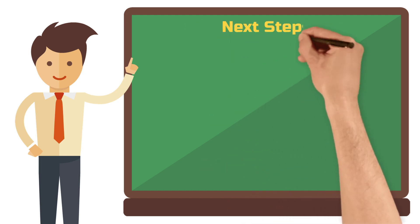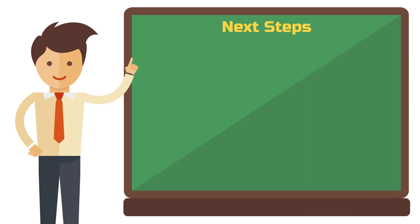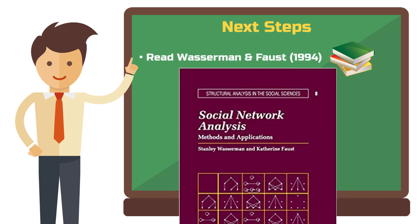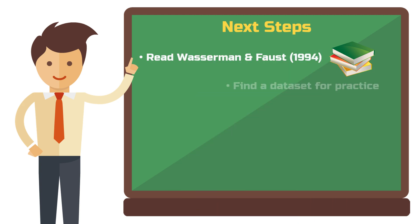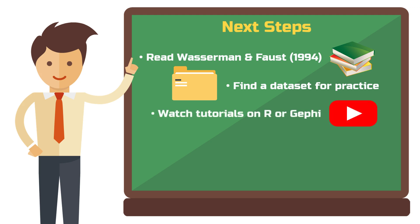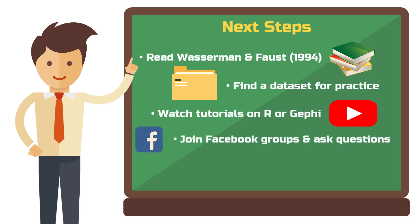The next steps to start your first social network analysis would be: first, read the foundational book on social network analysis by Wassermann and Faust from 1994. Two, get a free data set to practice. Three, watch YouTube tutorials on R or Gephi and apply what you learned until you're an expert. Four, join Facebook groups where you can ask questions. Five, learn by doing. And six, have fun.